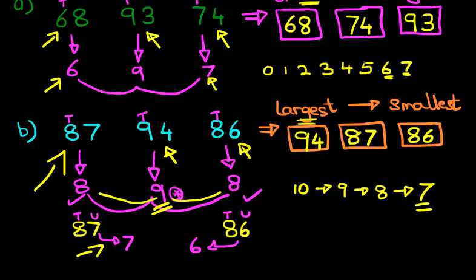So that is us reordering the numbers from the largest to the smallest. And notice, we looked at the tens first to begin with, and we managed to find the largest number. But we could not use the tens to work out the next number because the eights were the same, and we had to look at the units. And from that, we worked out that 87 was the next largest, and the smallest number was 86.